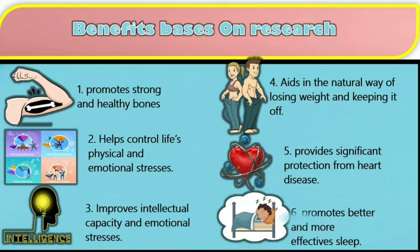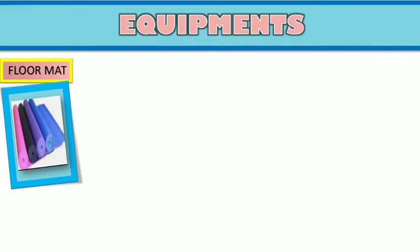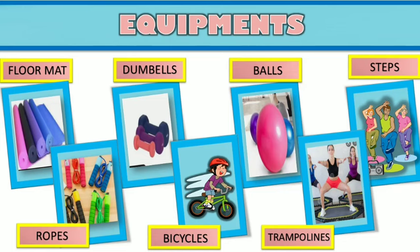Equipment. Aerobic equipment can include: floormat, dumbbells, balls, steps, ropes, bicycles, and trampolines.